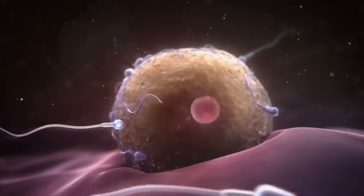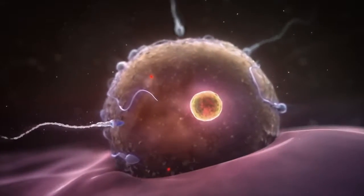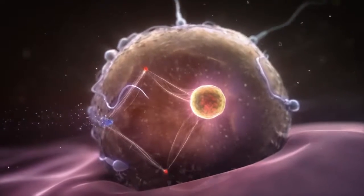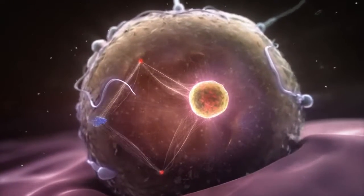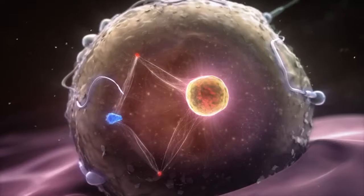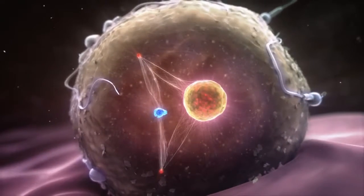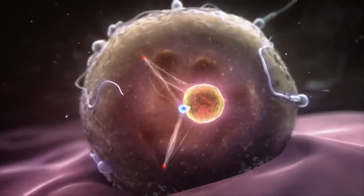As the sperm and the egg unite, the genetic materials of each are combined, providing the zygote with all the information necessary for transforming this single cell into the complex network of cells known as the human body.